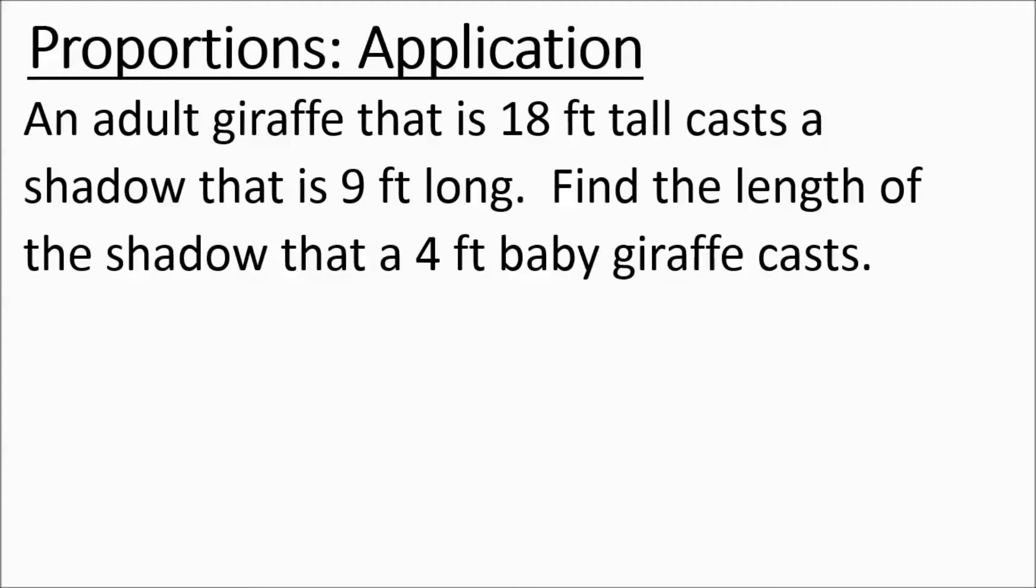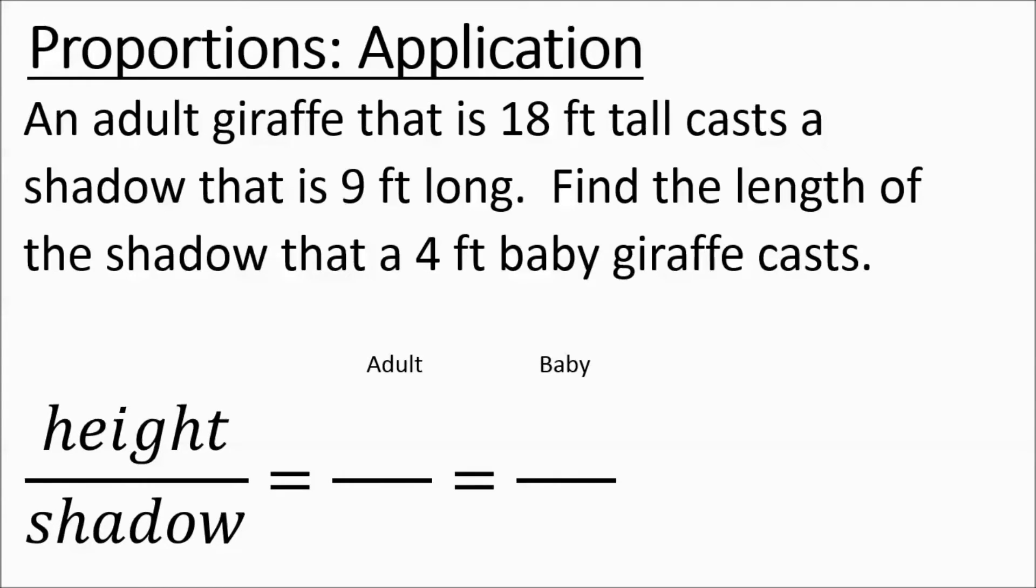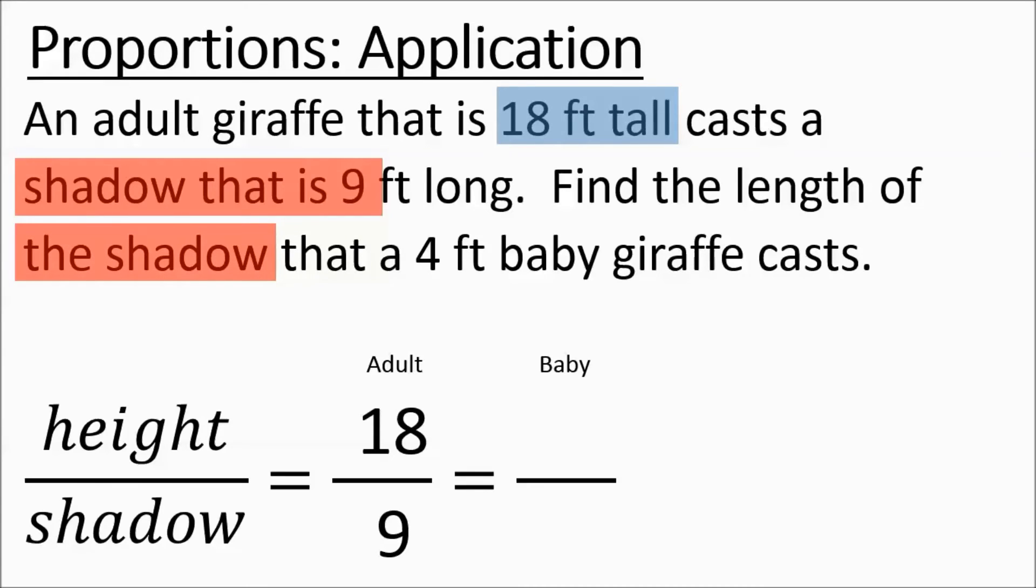So we're going to be dealing with heights and shadows. So we've got the adult giraffe. We've got the baby giraffe. We're going to set up 18 feet tall and its shadow is 9 feet. And then we've got our baby. They're saying find the length of the shadow so we don't know the shadow. And it says the baby is 4 feet tall. So it's going to go there.